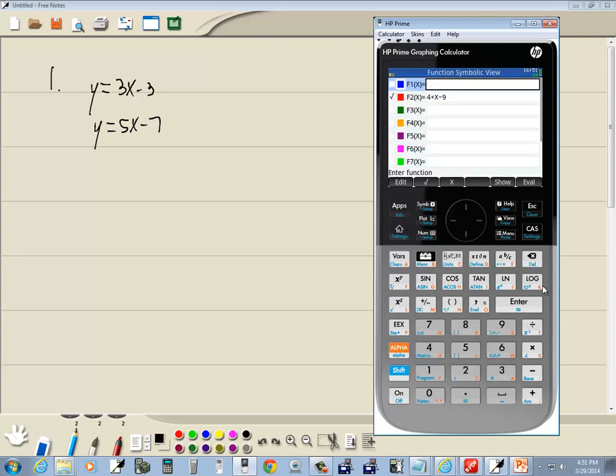I'm going to do a backspace on F1 and I want to put in 3x minus 3 there. So 3x minus 3, press enter. And on F2 I'm going to press my backspace to clean that out, and I want 5x minus 7. Now this method works very well if your problem is already solved for y. And then press enter.